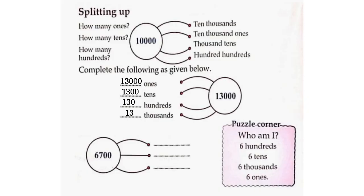Complete the following as given below: 13,000 ones, 1,300 ones, 130 hundreds. Then 6,700 ones. Puzzle corner — Who am I? 6,000 plus 610 plus 6 plus 1 equals 6,617, giving 6,666.